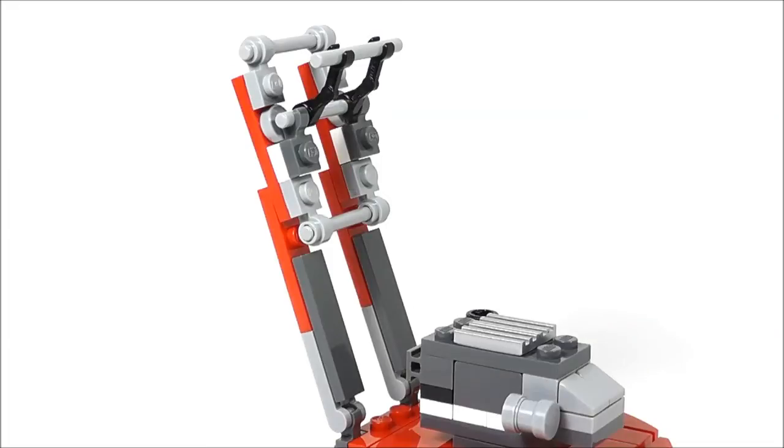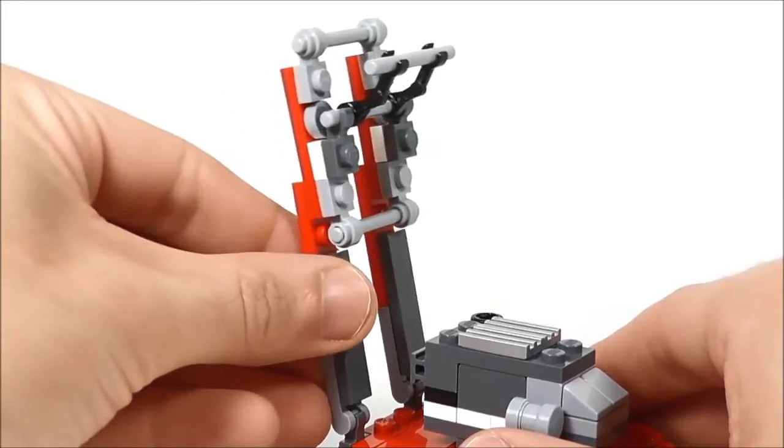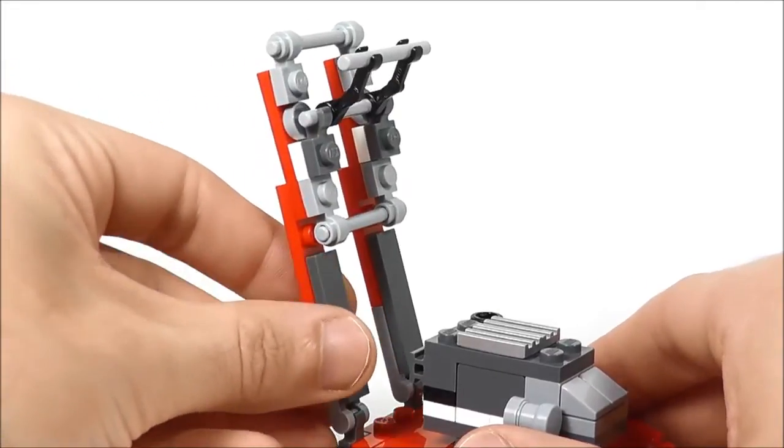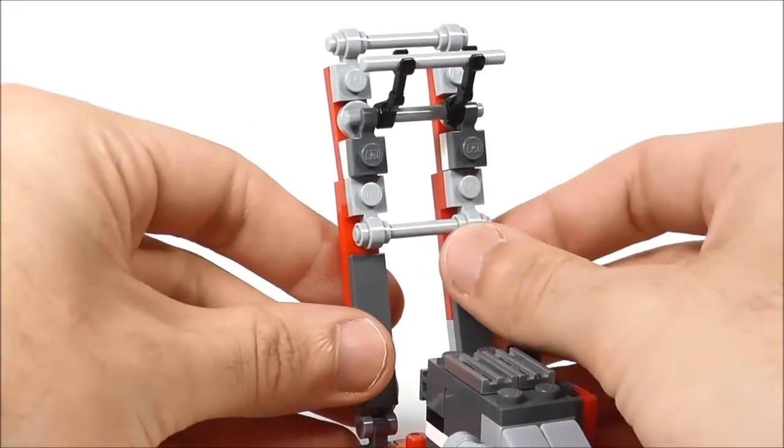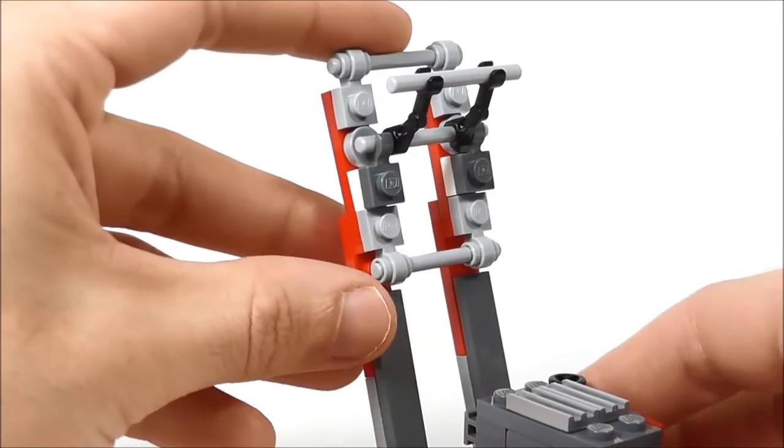Finally, we'll move on to the handle. The handle moves up and down like this. So it works just like a normal push mower would. There is a bar that goes across the middle for stabilization. And there's a bar at the top as well.